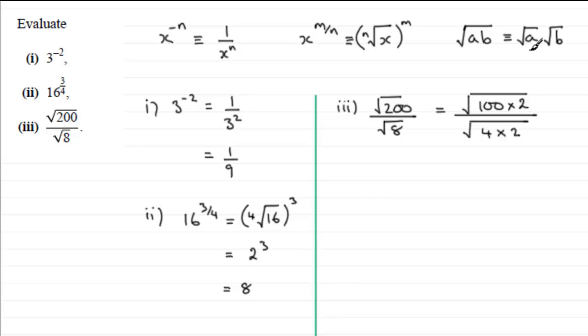So using this rule here, we can see that this is the same as the square root then of 100, multiplied by the square root of 2. I'll drop the times sign to say root 100 root 2. Divided by, and the same kind of thing applies on the bottom here, it's the same as root 4 multiplied by root 2, root 4 root 2.